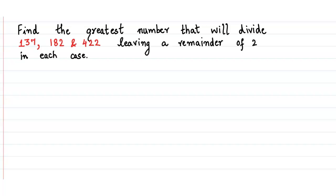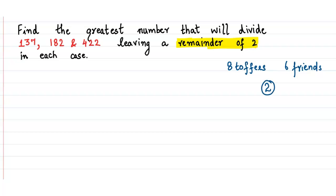The first question that comes up is: what is a remainder? Let's take a smaller example to understand. Say you have 8 toffees and you have to distribute them among 6 friends. How many toffees would be left with you after distribution? Yes, 2 toffees would be left with you. So this 2 is the remainder, or the extra number of toffees.